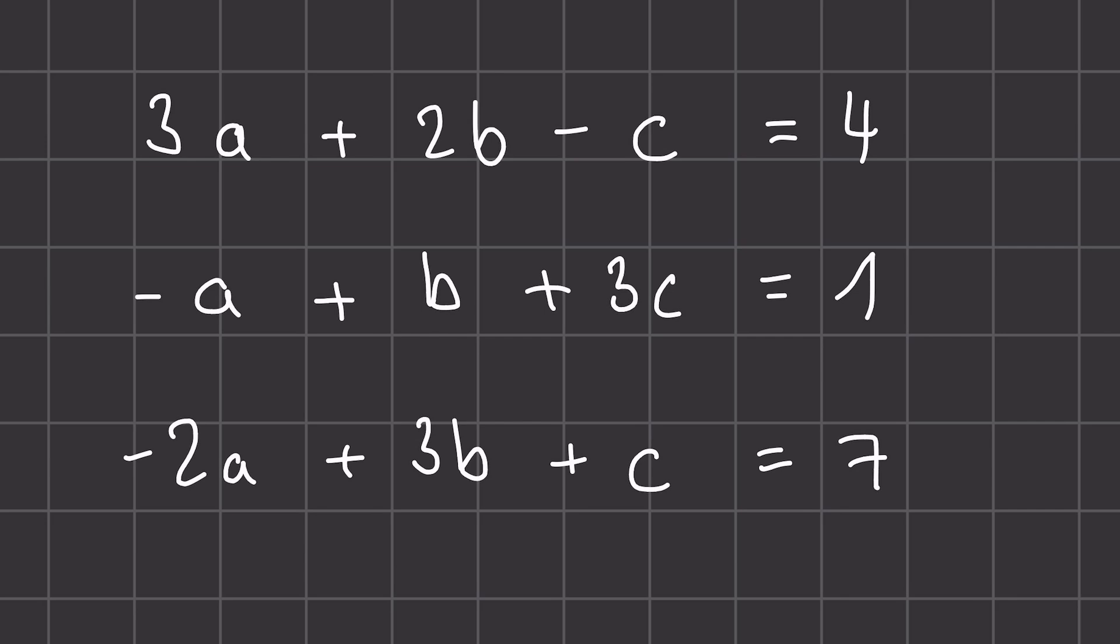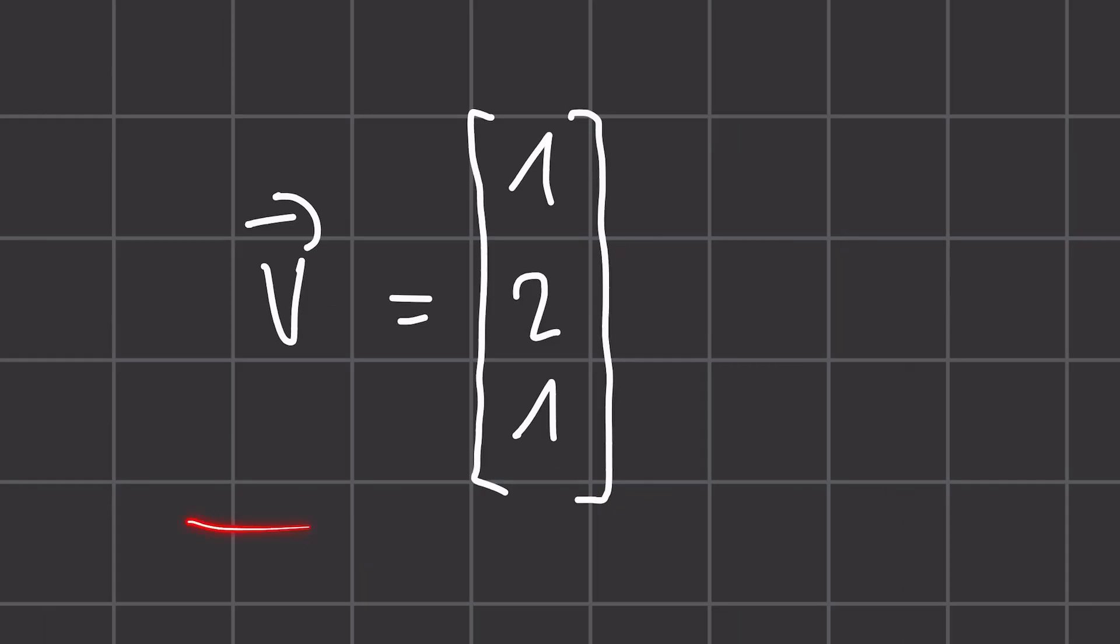So before jumping straight into solving these equations, I will show you what matrices are. So first here, we have a vector. You're probably familiar with this from my previous video, but essentially it's an ordered list of numbers. Here we have three numbers. Now a vector only has one dimension, which means every row in this vector has one number.